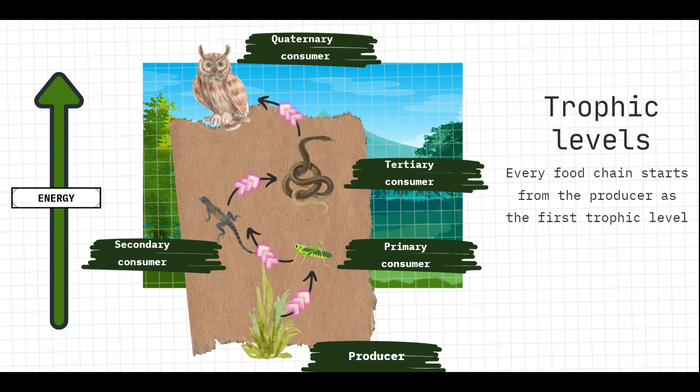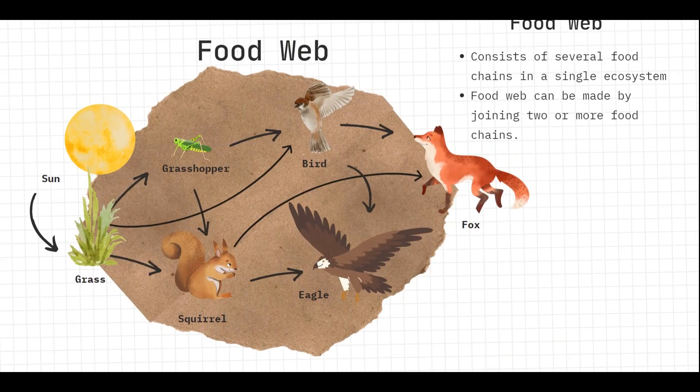Now let's take a look at a food web. A food web consists of several food chains in a single ecosystem. A food web can be made by joining two or more food chains, so the food web is a more complex feeding relationship because it has more than one food chain in it.